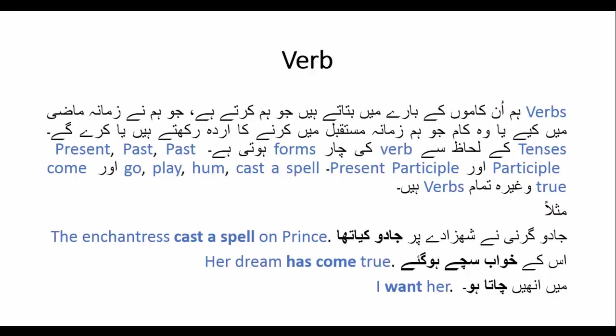Verb کی چار forms ہیں: present، past، past participle اور present participle۔ ان چاروں forms کو آپ نے بالکل یاد کرنا ہے spelling کے ساتھ کیونکہ بہت سارے verbs ایسے ہیں جن کی forms بدلنے کے ساتھ spelling میں بھی تبدیلی آتی ہے۔ مثلاً 'die' کا present participle 'd-y-i-n-g' یعنی 'dying' بنتا ہے، 'dieing' نہیں۔